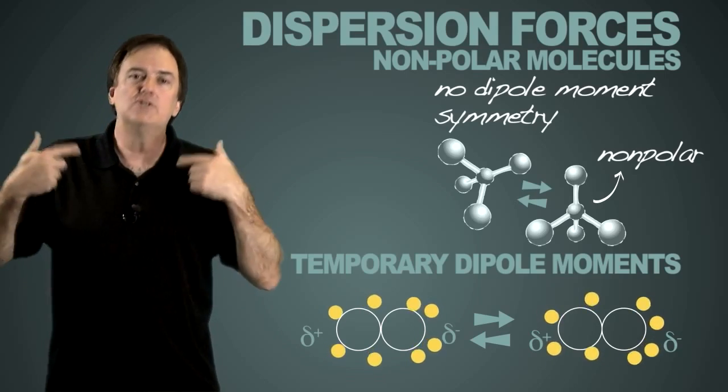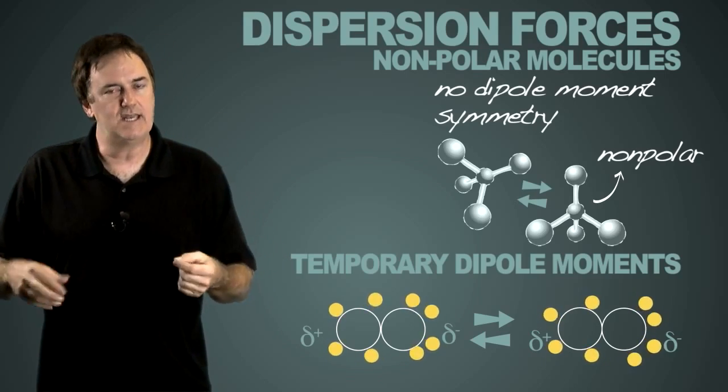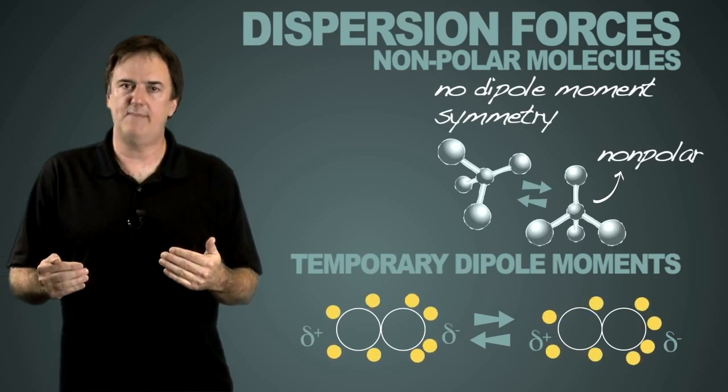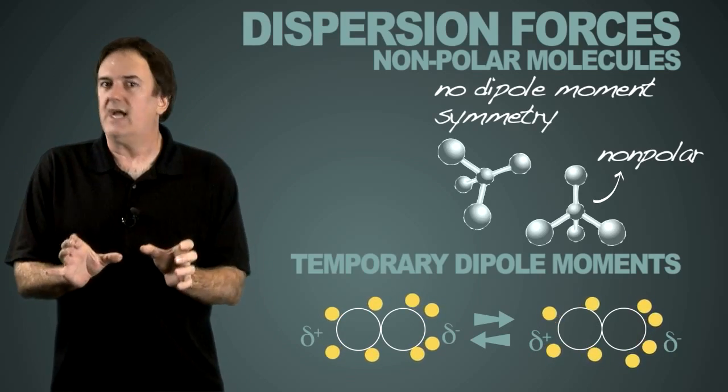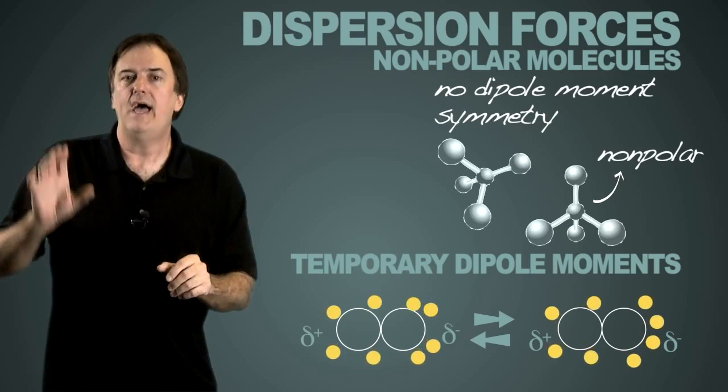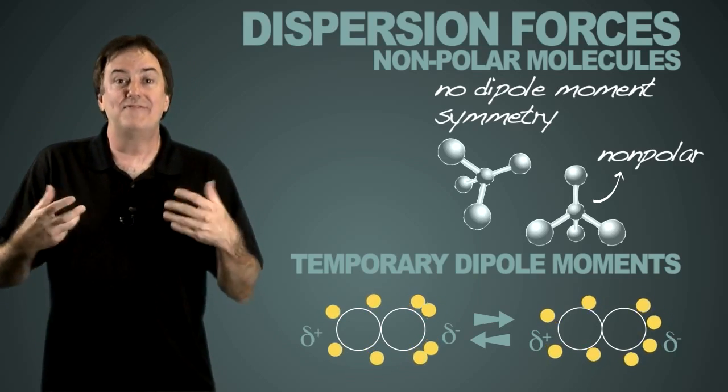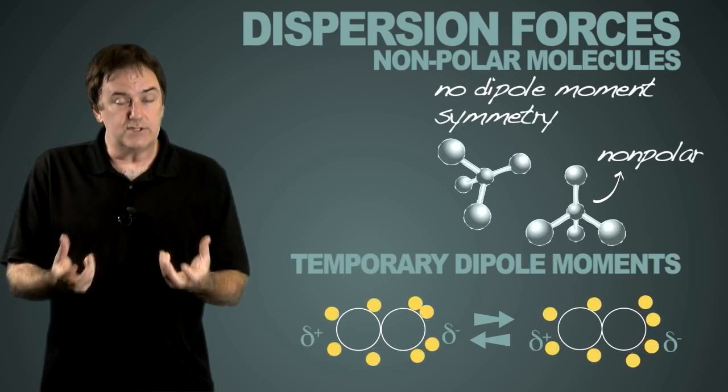This will change over time and time again in very fast timeframe, yet the attraction is there. So it's a very slight attraction. It's not nearly as strong as a permanent dipole, but that's what we call dispersion forces.